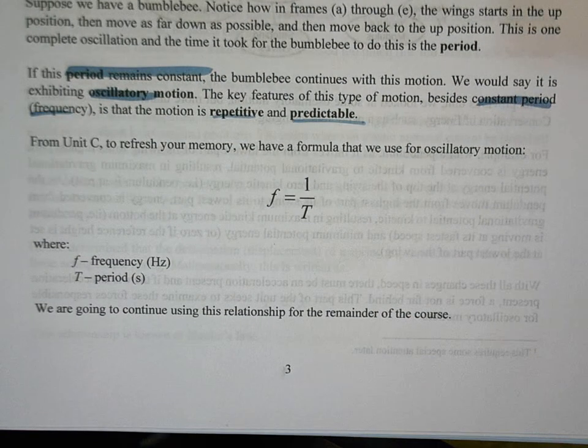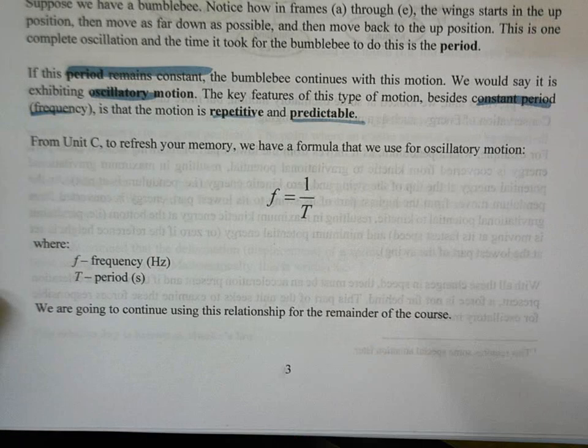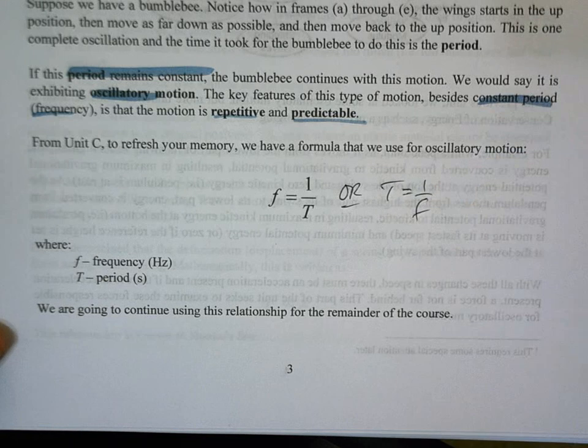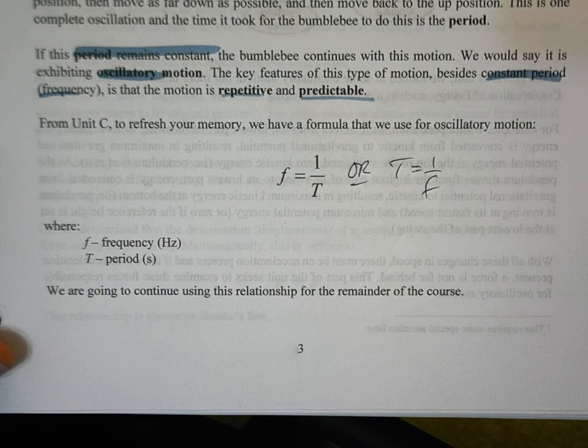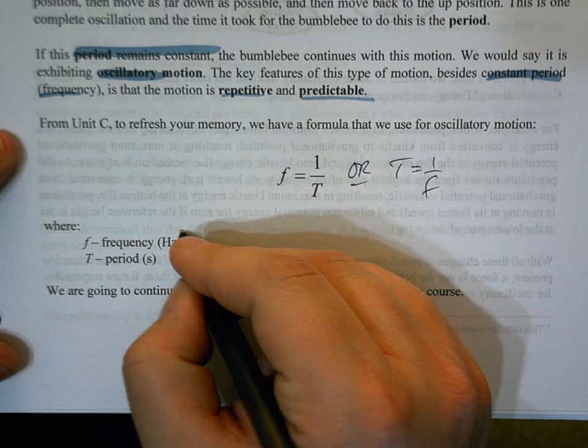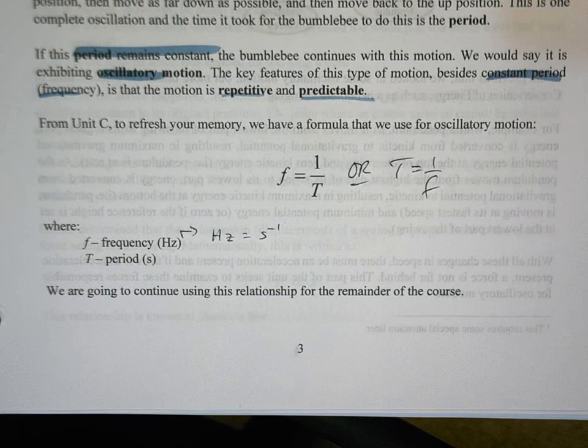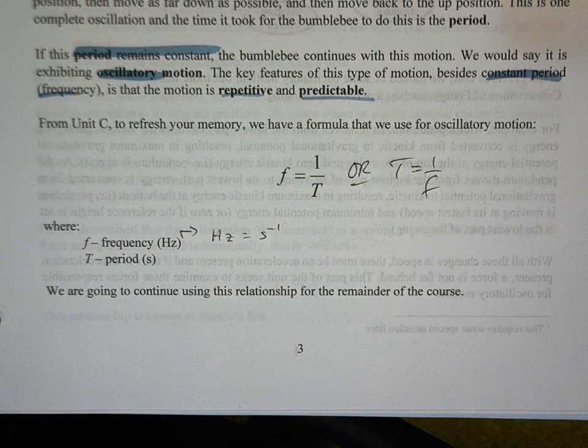So just to refresh from the last unit, we have that relationship for frequency and period. The frequency is equal to one over period or period is one over frequency, depending on what you need, where our frequency is in hertz and t is the period in seconds. And again, just a reminder, hertz is another way of saying seconds to the minus one. So this relationship, we're going to use it even more in this unit compared to the last unit.